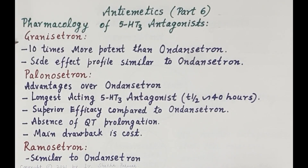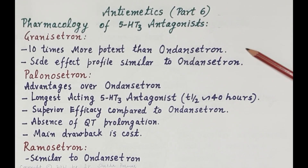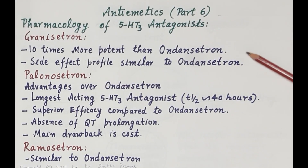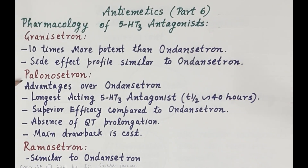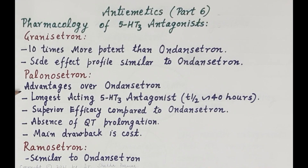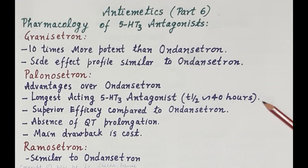The next drug is granisetron. Granisetron is 10 times more potent than ondansetron, and its side effect profile is similar to ondansetron. The next 5-HT3 antagonist is palonosetron. The key advantage of palonosetron over ondansetron is that it is the longest-acting 5-HT3 antagonist, with a half-life of about 40 hours.